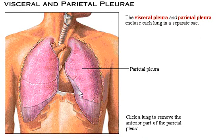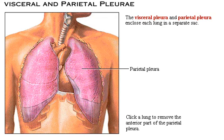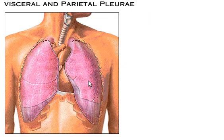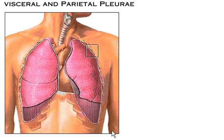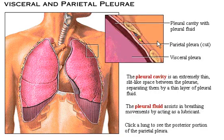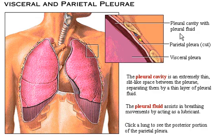As we looked at earlier, the pleura itself consists of two membranes: visceral and parietal, and we're going to look at both of them here. If we remove the pleural cavity, we can see the two layers — the pleural cavity with the fluid as shown, and it shows the visceral membrane.